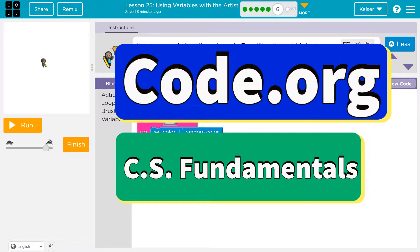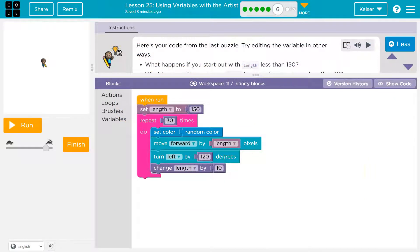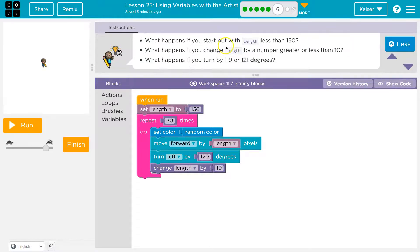This is code.org. Let's see what we have. Here's your code from the last puzzle. Try adding the variable in other ways. What I changed up was the color. Try editing the variable in other ways.